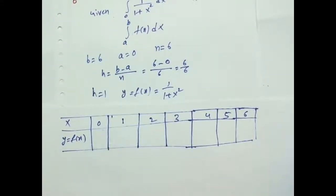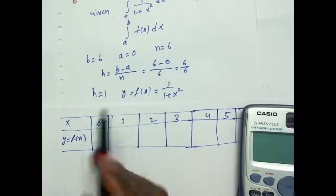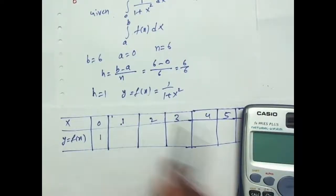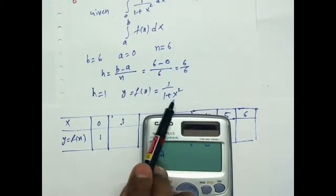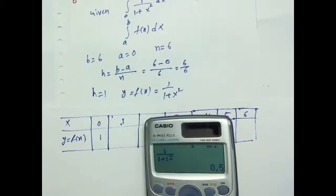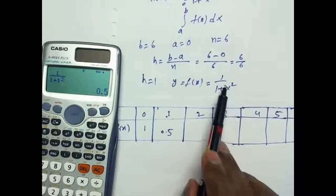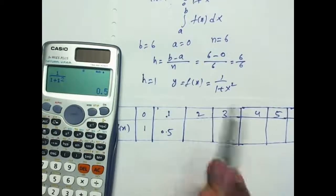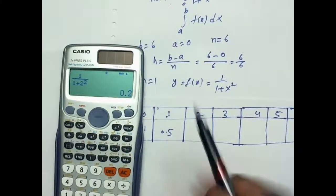Now computing y equal to 1 by 1 plus x square. For x equal to 0: 1 by 1 plus 0 equals 1. For x equal to 1: 1 by 1 plus 1 square equals 1 by 2, that is 0.5. For x equal to 2: 1 by 1 plus 2 square equals 1 by 5, that is 0.2.